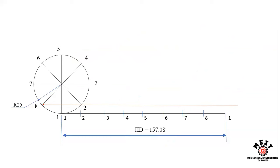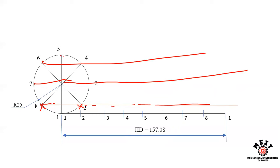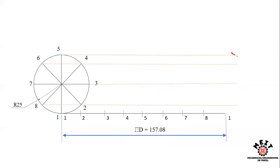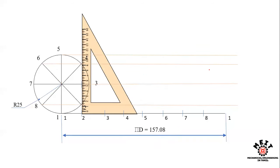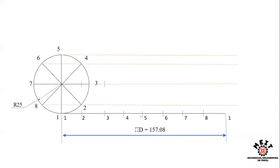From all 8 circumferential points of the circle, draw horizontal lines across the diagram. Similarly, mark the 8 center positions along a horizontal line at the height of the circle's center, corresponding to each division of the baseline — center 0 through center 8.